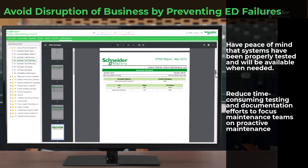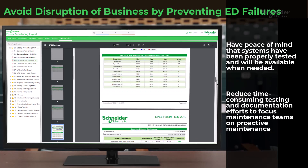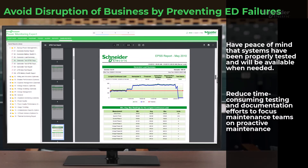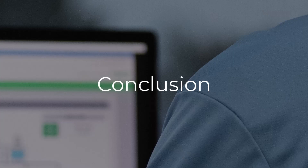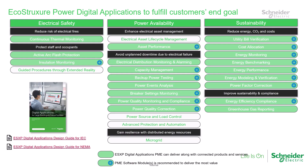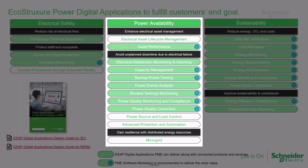Reduce time-consuming testing and documentation efforts to empower your maintenance teams to focus on proactive measures. The e-learning video emphasizes the importance of proactive electrical system management to prevent disruptions and failures. It covers various key areas including breaker settings monitoring, power events analysis, power quality monitoring, capacity management, backup power testing, and configuration and commissioning efficiency.